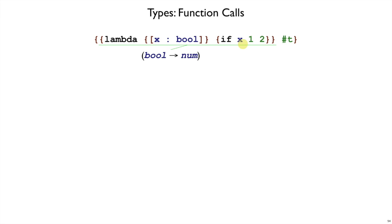And this lambda, as we've seen, has type bool arrow num, because we can show that through our tree before. And the argument here true, well clearly that has type bool.